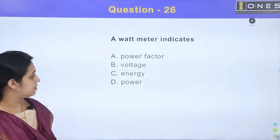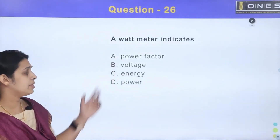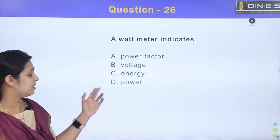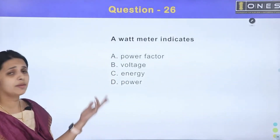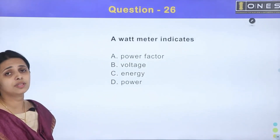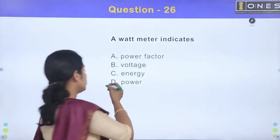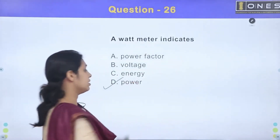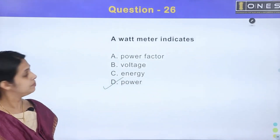A wattmeter indicates — options: a) power factor, b) voltage, c) energy, and d) power. A wattmeter is used to measure power, so the answer is option D: power.